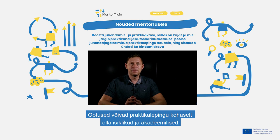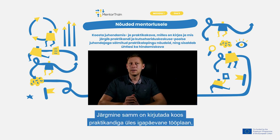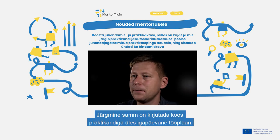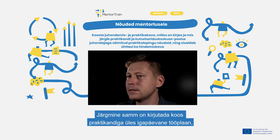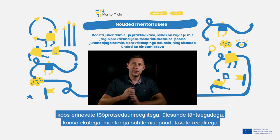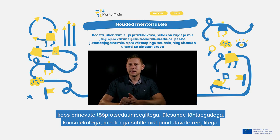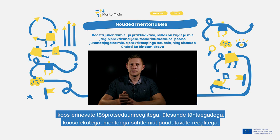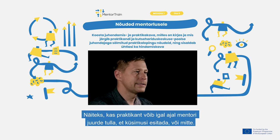Expectations can be personal and academic according to the training agreement. The next step is to write down together with the apprentice a work plan on a daily basis, with rules for different work procedures, deadlines for tasks, meetings, and communication rules with the mentor. For example, whether the apprentice can come to the mentor at any time to ask questions or not.